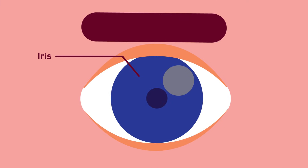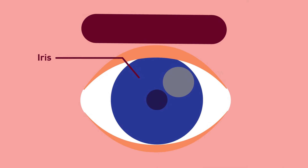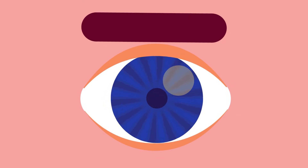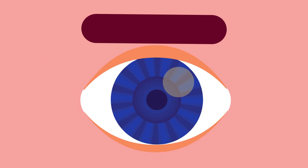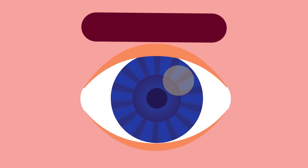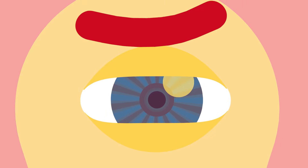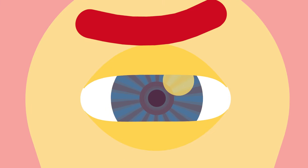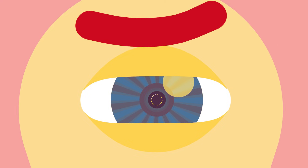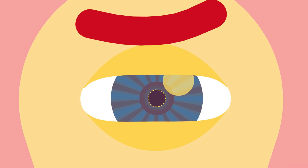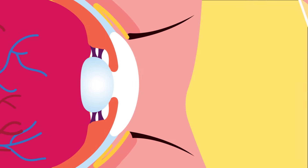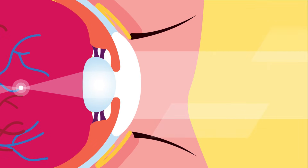The iris is pigmented with colour and has radial and circular muscles that regulate the amount of light entering the eye. The round hole at the centre of the iris, through which light enters, is called the pupil.